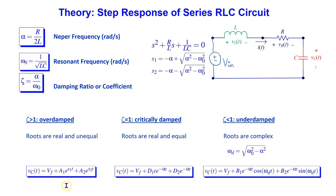Note that the constants A1, A2, B1, B2, and D1, D2 can be determined using the initial conditions, and this is commonly discussed in first-year textbooks. Knowing the general expression of the response is useful for sanity checking when we use Mathematica to do the calculations.